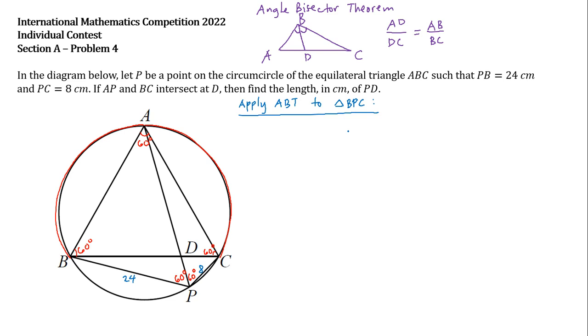Apply angle bisector theorem to triangle BPC. So let's have BD divided by DC equals BP divided by PC. It follows then that BD over DC is equal to 24 over 8 which is equal to 3. In other words, if the ratio of BD and DC is 3 is to 1, BD must be thrice DC. So we can represent DC by Y and BD by 3Y.